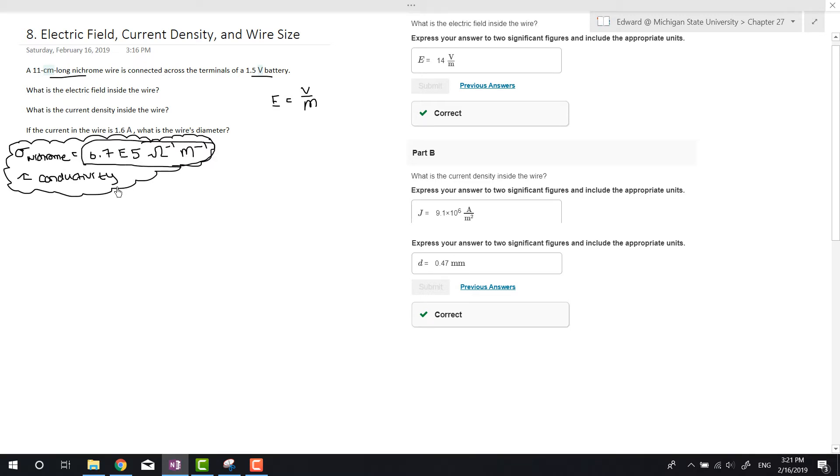So E, the electric field, equals volts over length. We've got 1.5 volts divided by 11×10^-2 meters. So 1.5 divided by 11×10^-2 equals 13.64 volts per meter, which rounds to 14 volts per meter. That's part A.